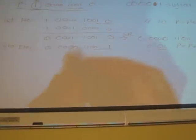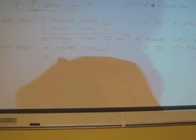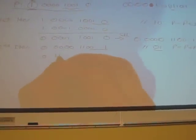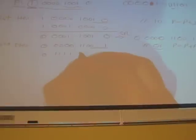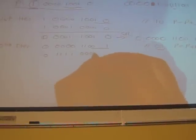So then we take the A value, so this becomes 0, 1, 1, 1, 1, 0, 0, 0, 0.